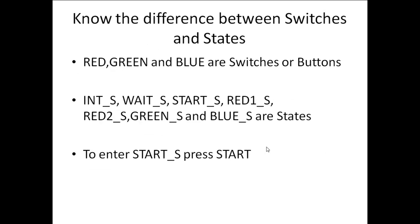Now we need to know the difference between switches and states. Red, green, blue and start — they all are switches. Red_s, start_s, green_s, blue_s are states. When you press a button, the system will enter a particular state. So please don't get confused between state and button. For example, if you want your system to enter start state, before that you should press the start button.